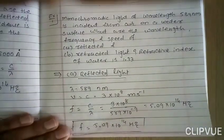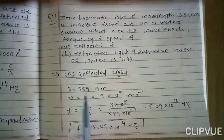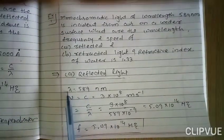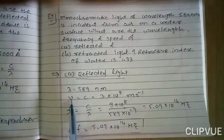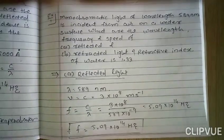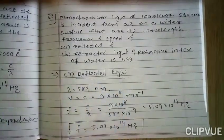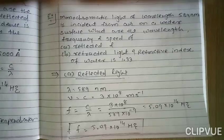So we get frequency F = 5.09×10¹⁴ Hz. These are the values of wavelength, velocity, and frequency for reflected light.